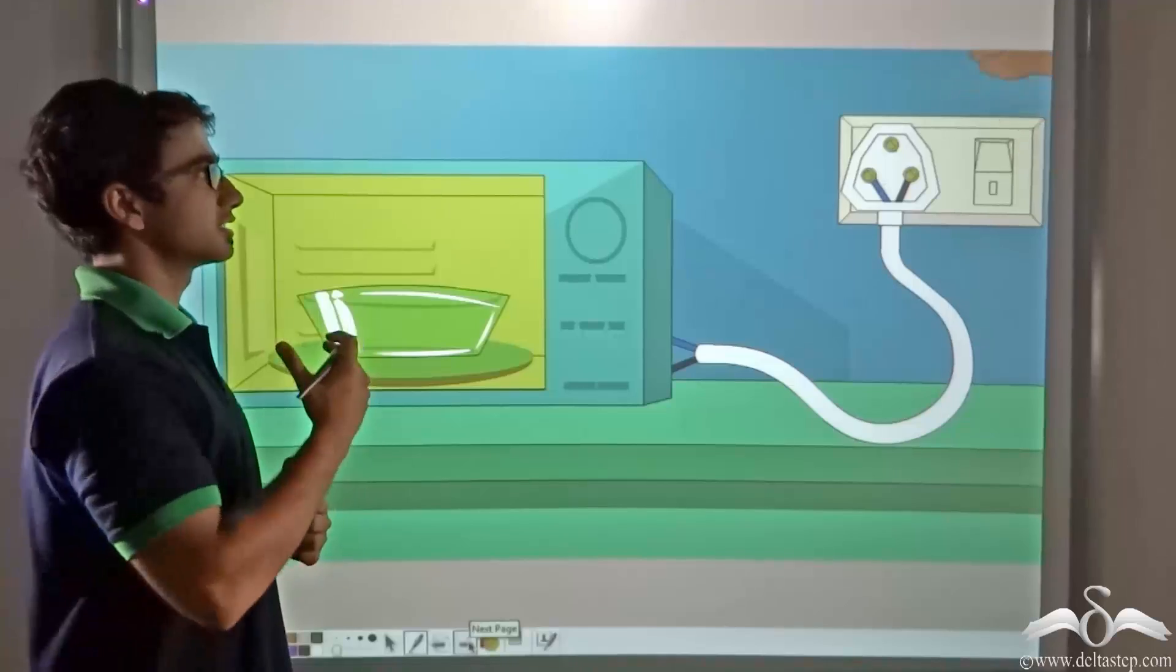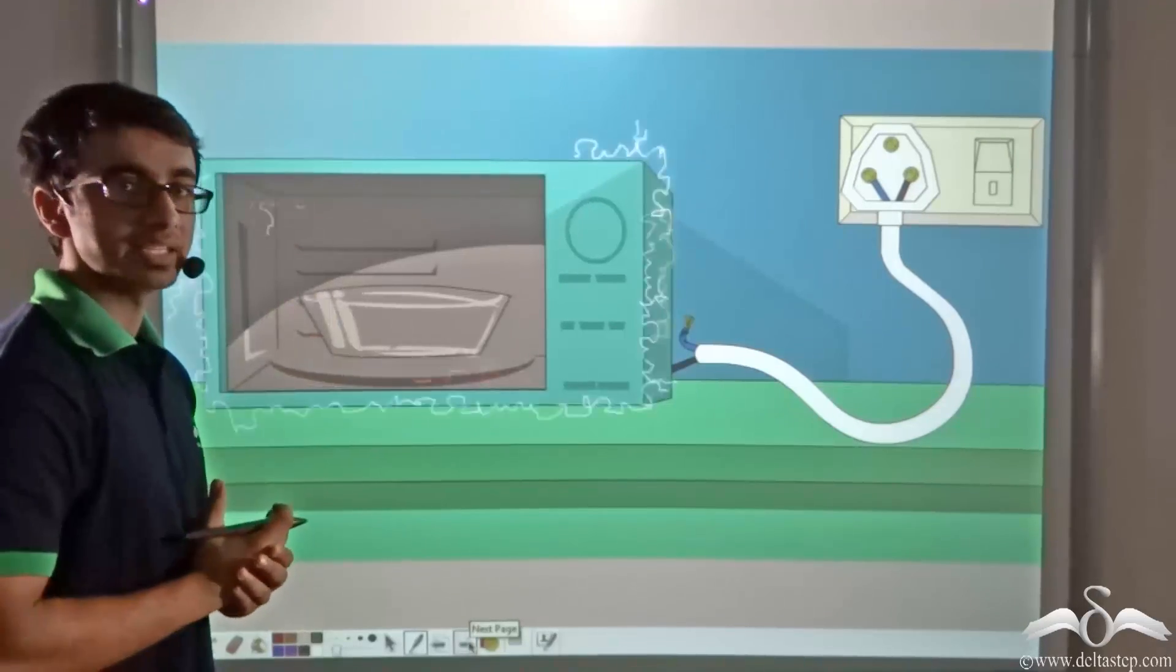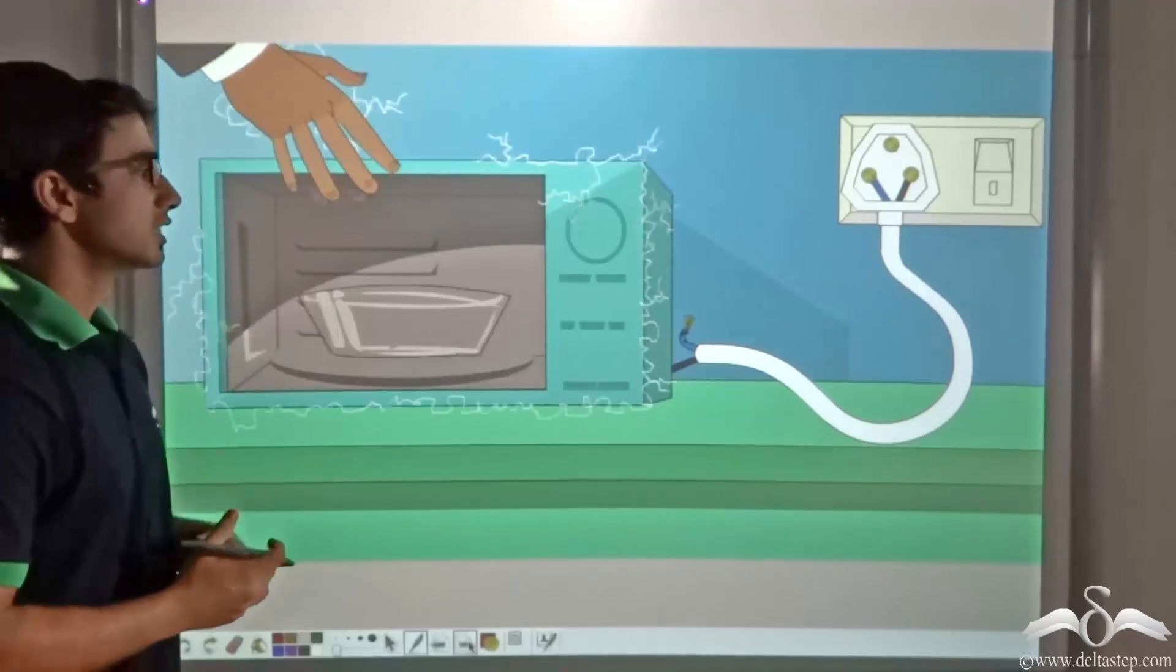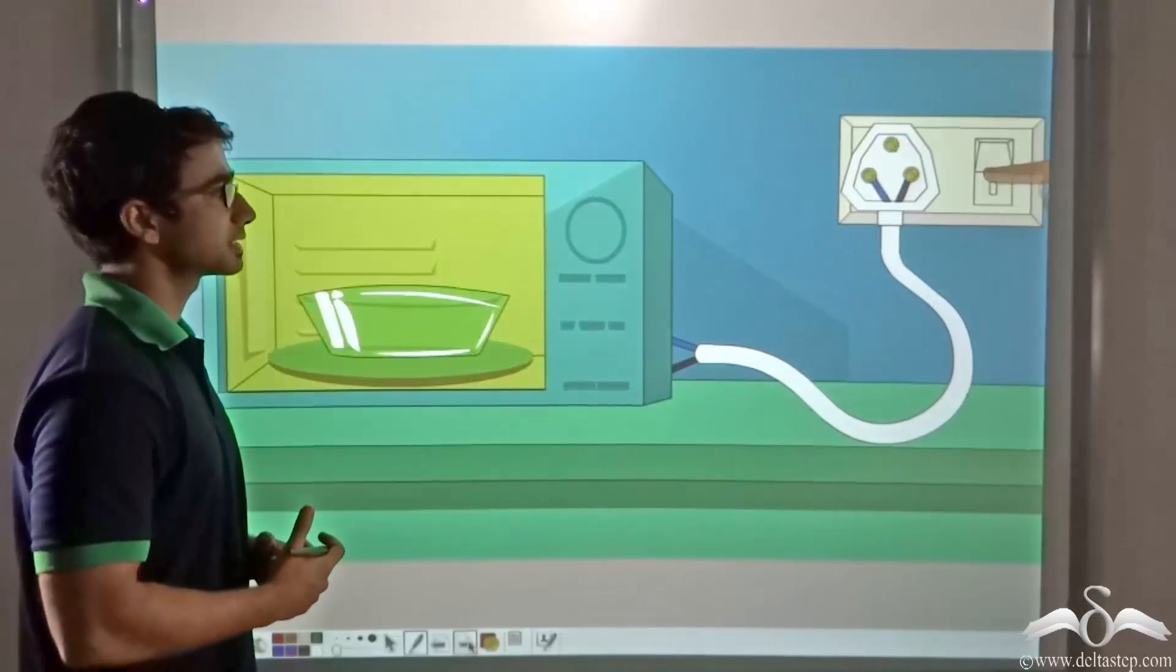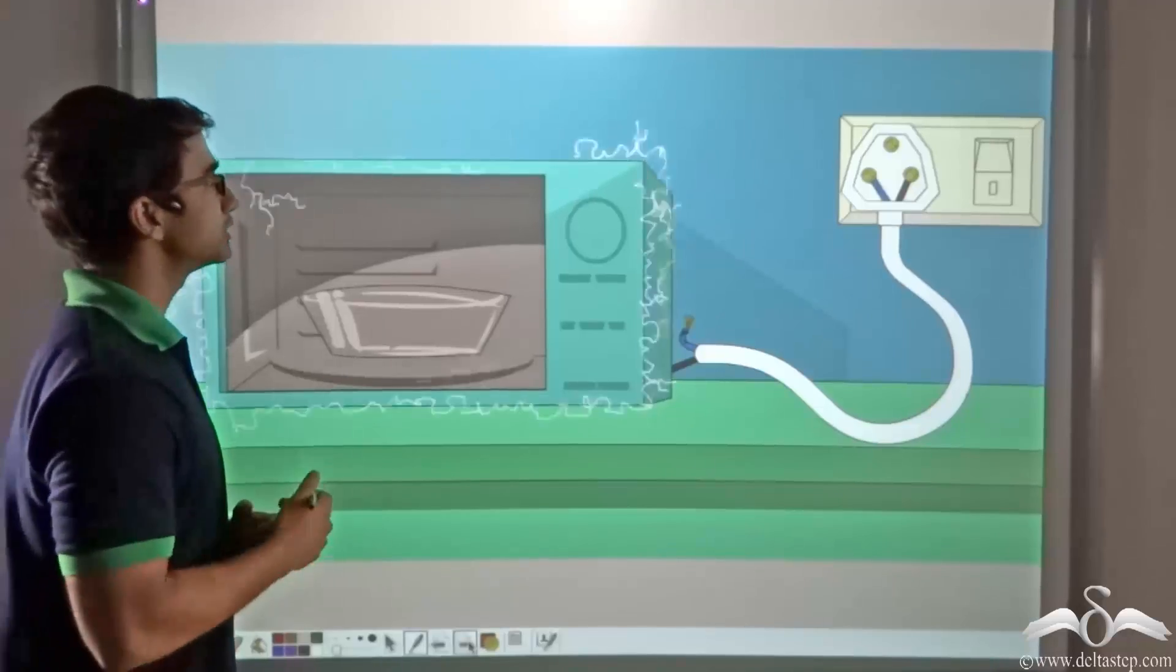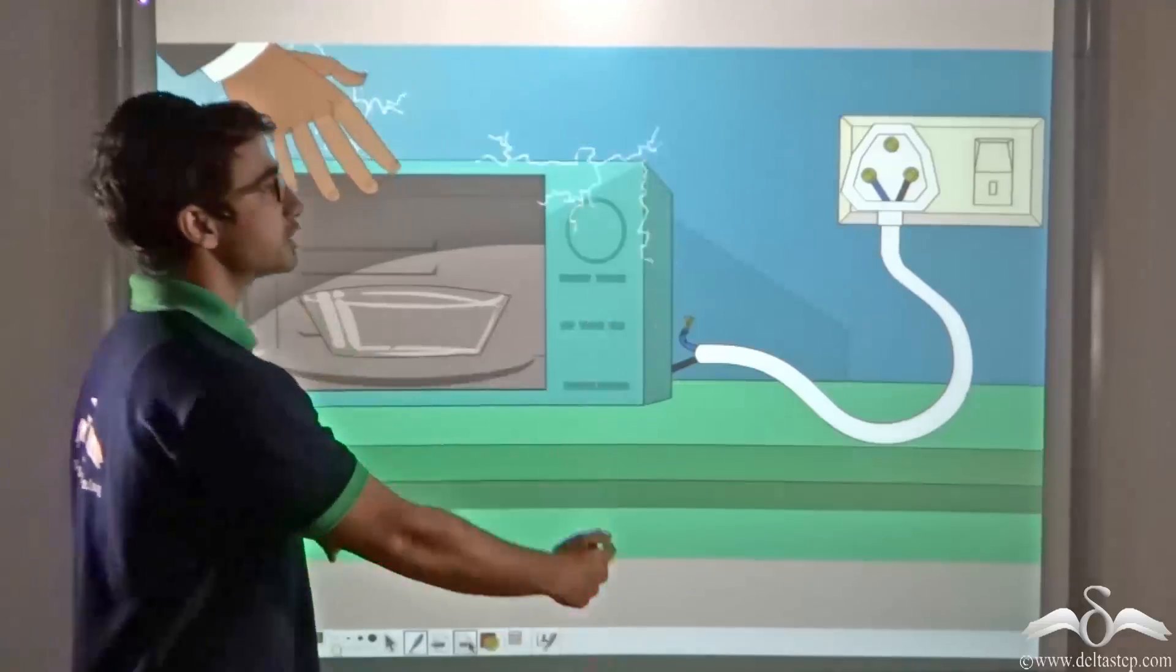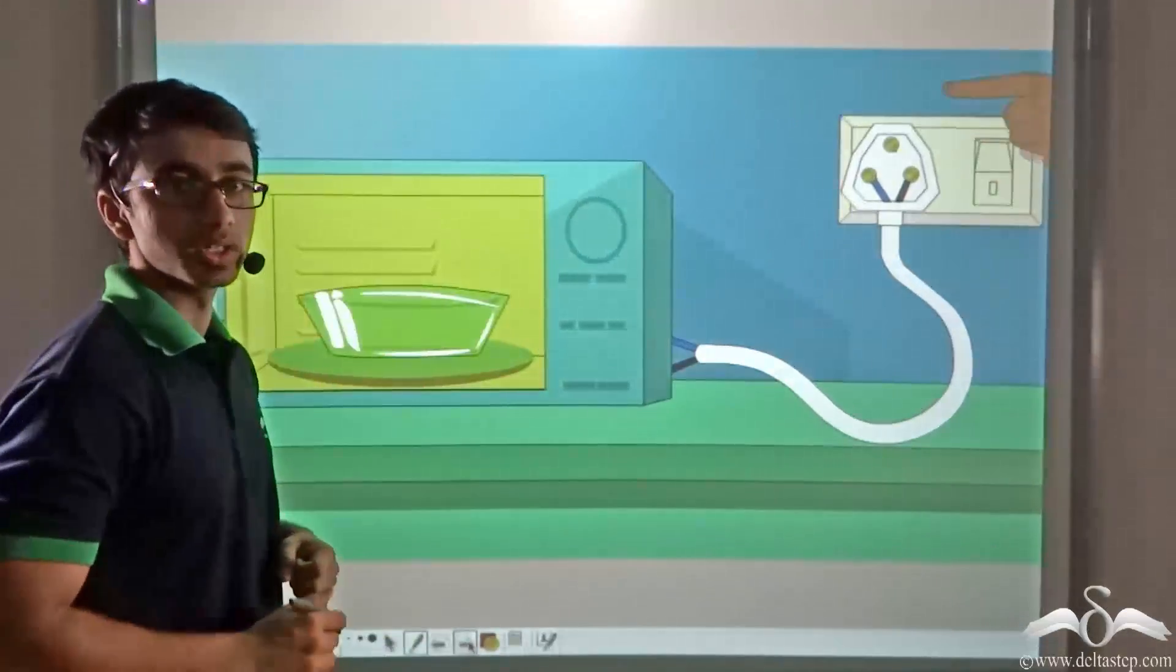Now consider a simple case. Over here there is a fault that has taken place with the appliance and when the person touches it, he receives a severe electric shock. Now what do you think is happening? Due to this fault that has taken place, the entire body of the microwave oven is getting electrified. So when the person is touching it, he receives a severe electric shock and all the current from the main supply is traveling through his body down to earth.